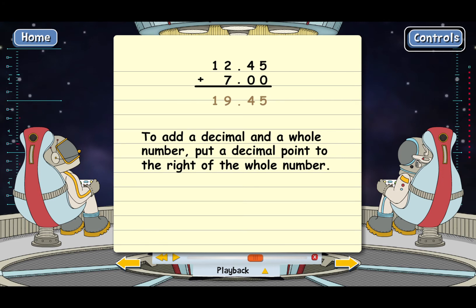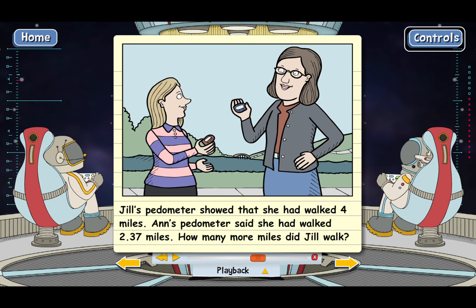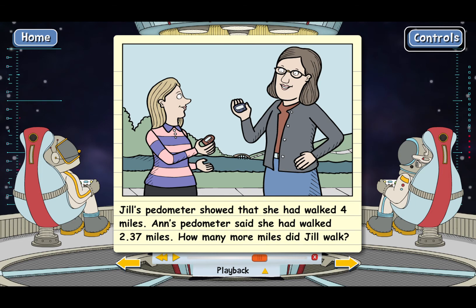Now let's do a subtraction example. Jill's pedometer showed that she had walked 4 miles. Ann's pedometer said she had walked 2.37 miles. How many more miles did Jill walk? On this problem, we need to figure out 4 minus 2.37.